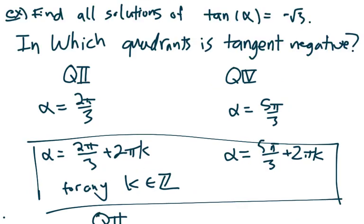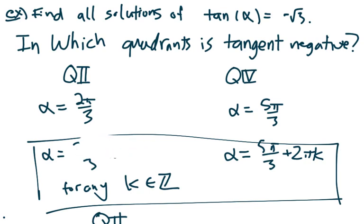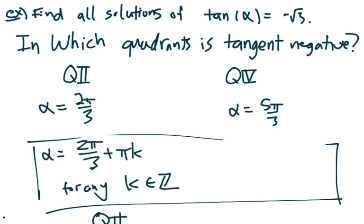We can use this same trick back in our previous tangent example. Notice that 2π/3 and 5π/3 are exactly pi units apart. So I actually don't need two lists for that problem either — just 2π/3 + πk. This makes a lot of sense because the period of tangent is not 2π; tangent repeats itself after pi units. It has a different period than sine and cosine, and that gives exactly what you would expect for a function whose period is pi.